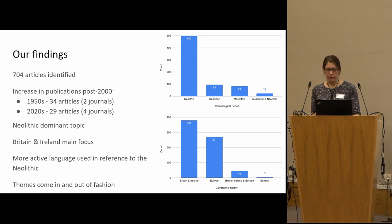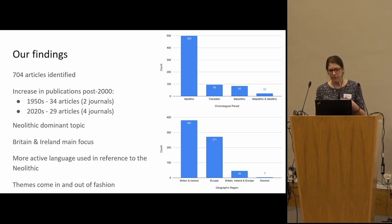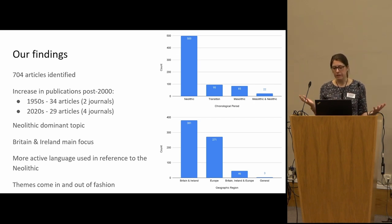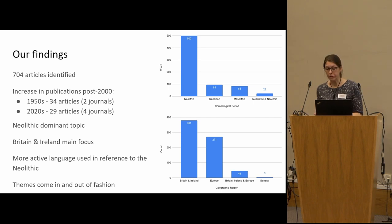Despite the international scope of the journals targeted, Britain and Ireland dominate the publications' focus, perhaps because as islands they've drawn more research attention regarding the spread and movement of peoples. Anecdotally, Emily also noticed a distinct use of more active language when referring to the Neolithic, whereas the Mesolithic is described in more passive terms. Themes waxed and waned according to what's current in archaeology — DNA is the hot topic right now, and in rare cases it has been co-opted into nationalist and racist narratives of origin, used to argue against modern-day immigration.